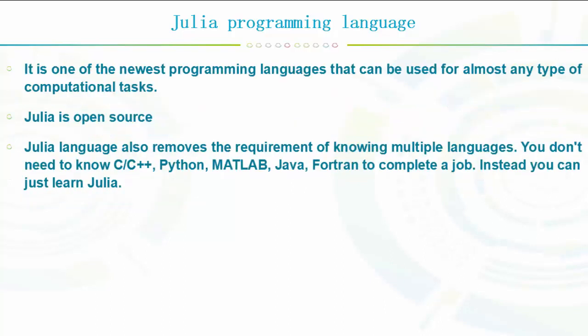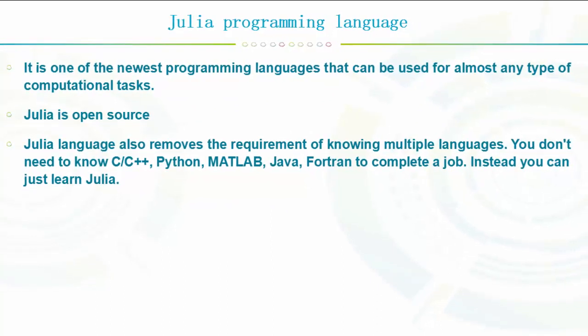Julia is an open source language and it's one of the newest programming languages that can be used for almost any type of computational tasks. Julia also removes the requirement of knowing multiple languages.